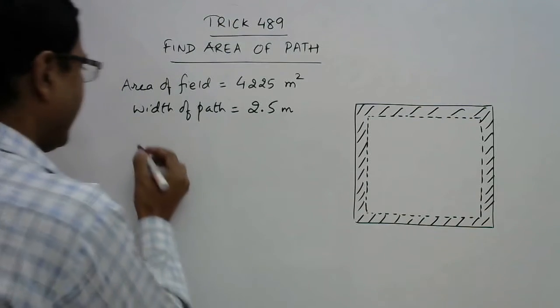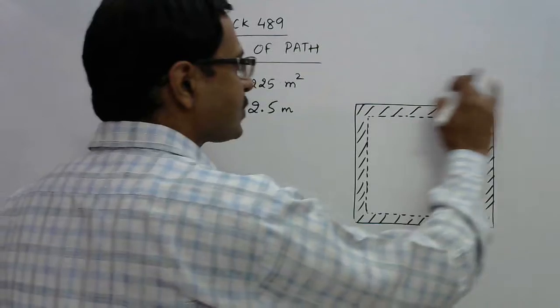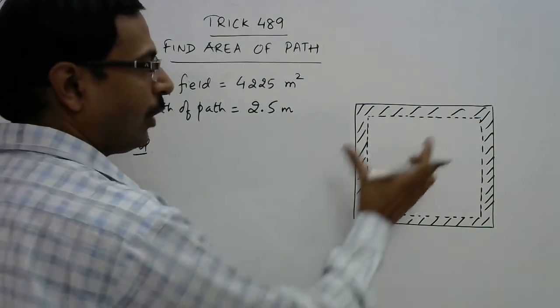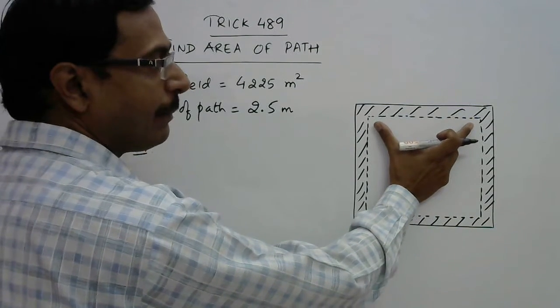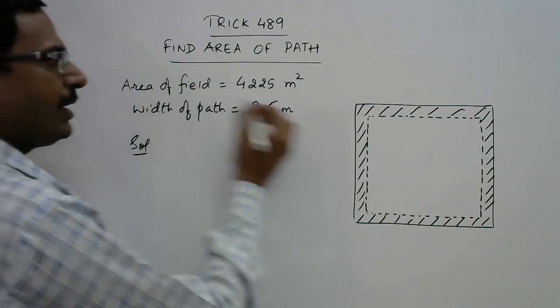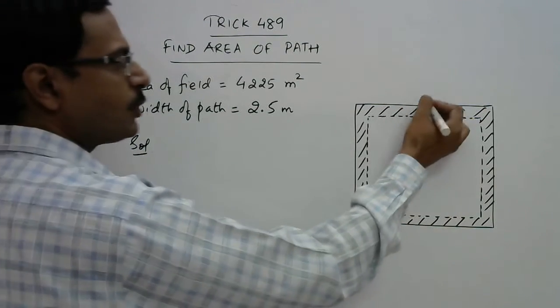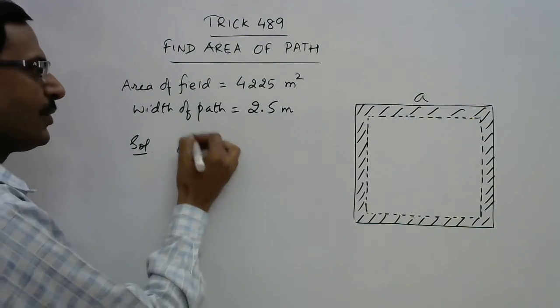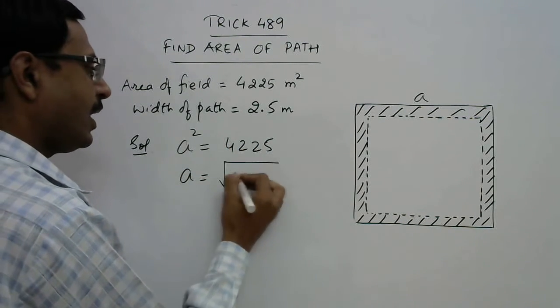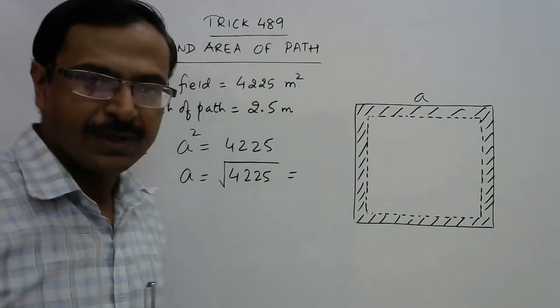The first thing is to find the side of the square so that we can find out the inside boundary. Since the outer edge is suppose a, then the area is given as 4225. You need to find out what is the square root of 4225. How to find that?